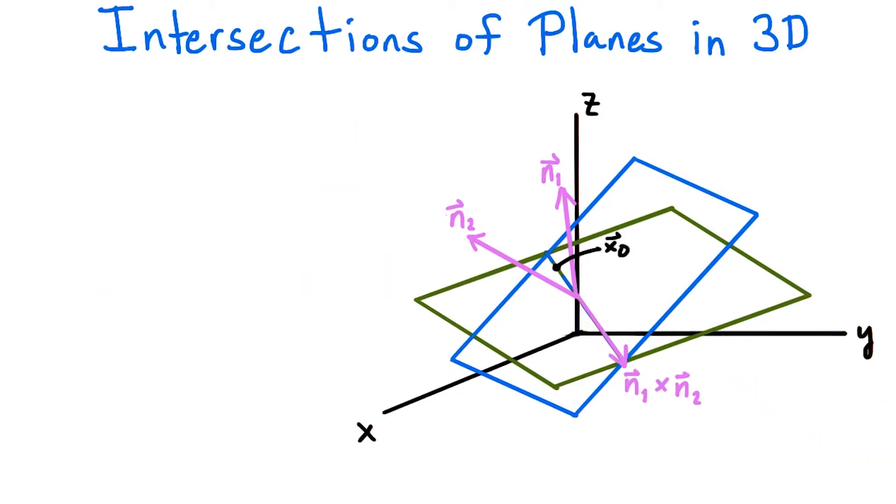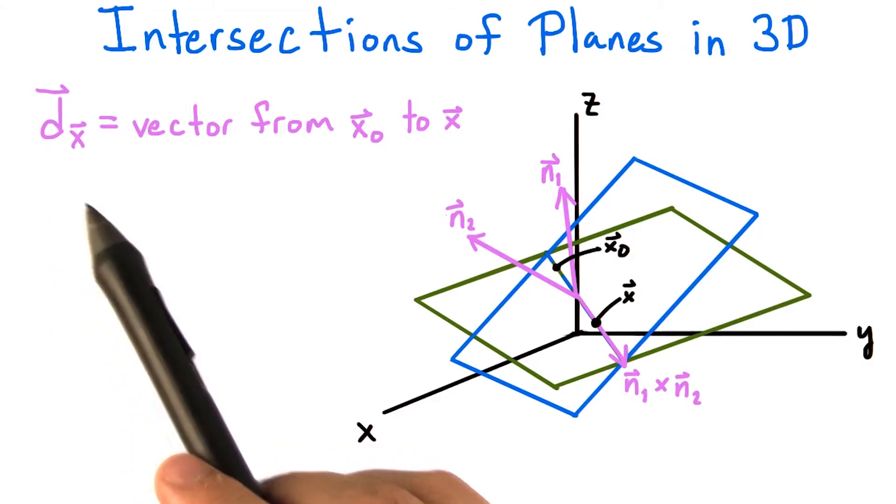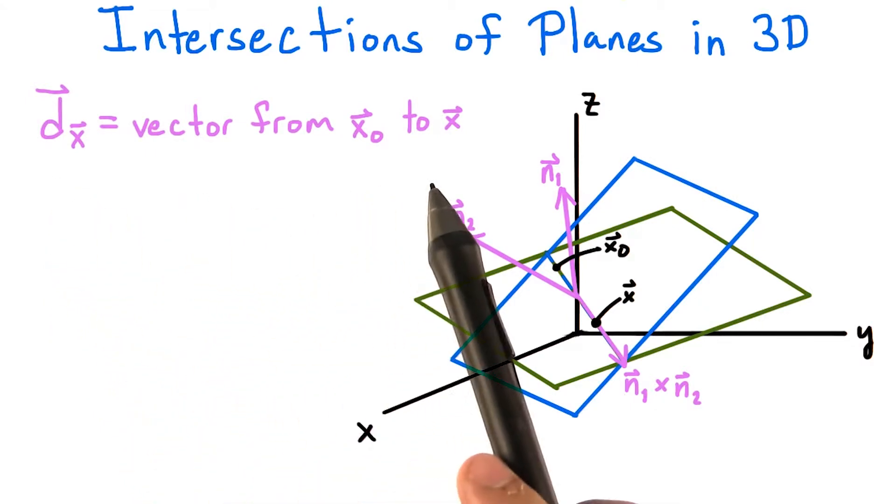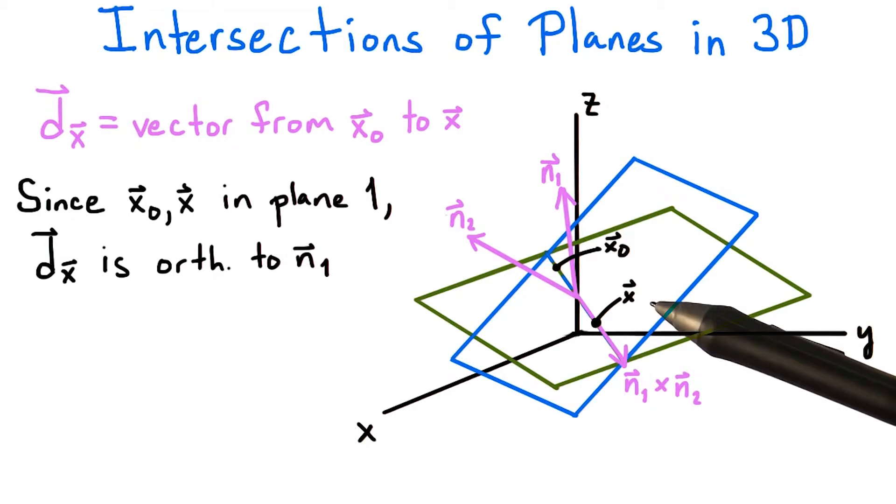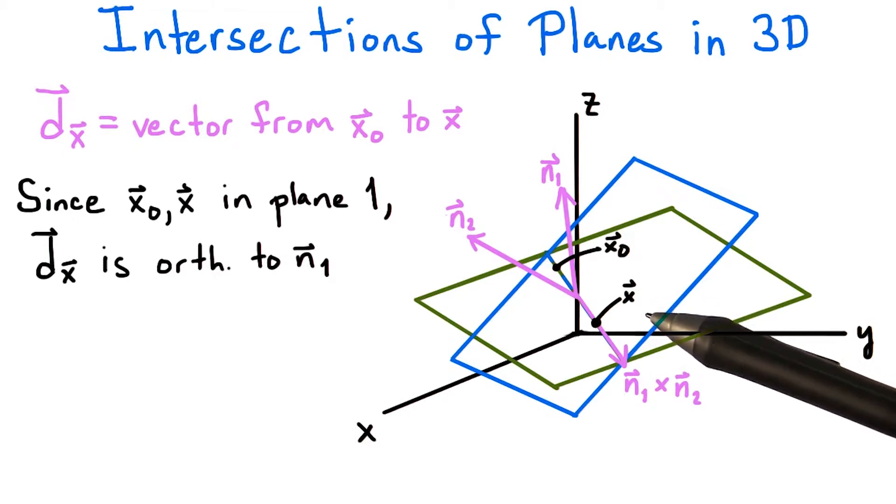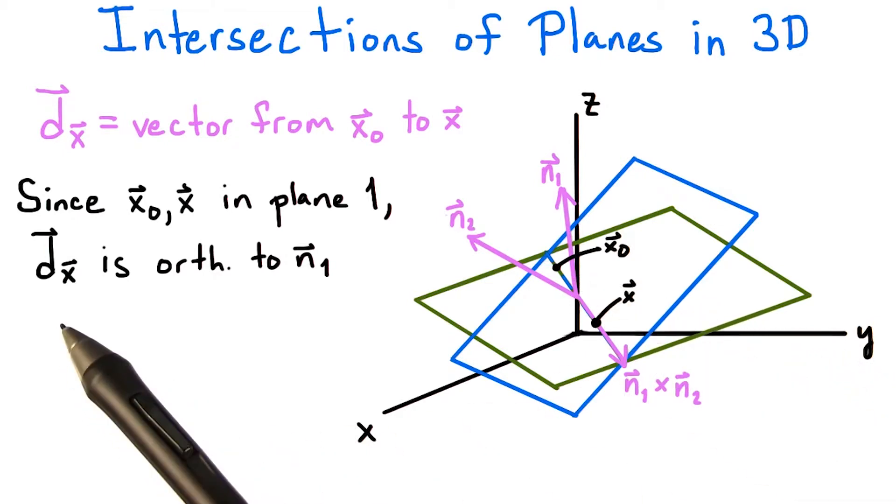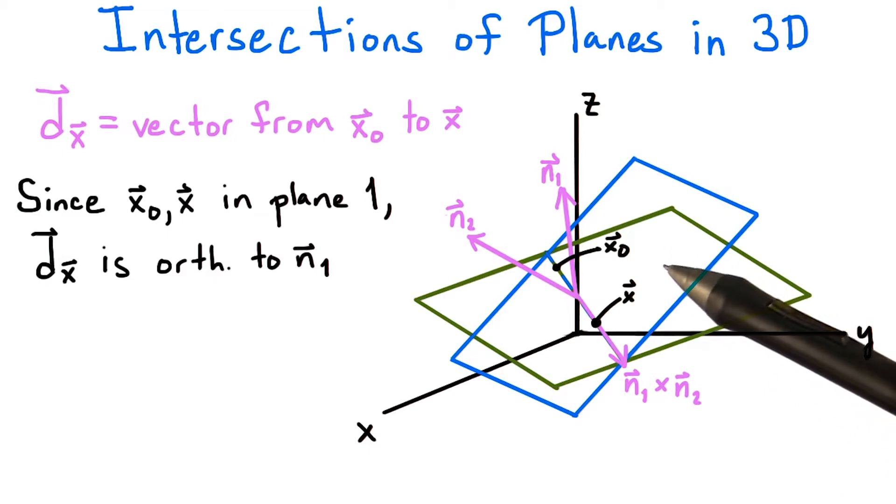Let's pick an arbitrary point in the intersection of the two planes and call it x0. If x is any other point in the intersection, then let's call d sub x the vector from x0 to x. Since x0 and x are both in the first plane, the vector connecting them, d sub x, will be orthogonal to the normal vector to the first plane, n1.